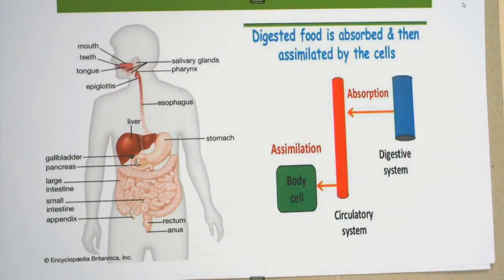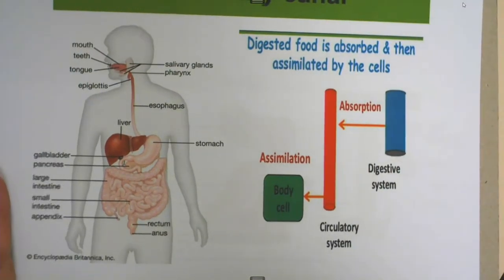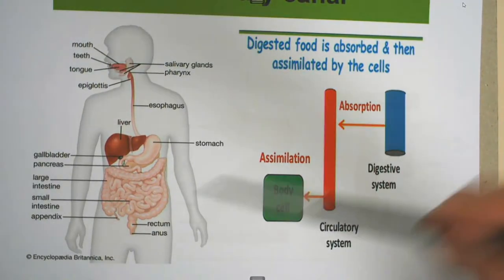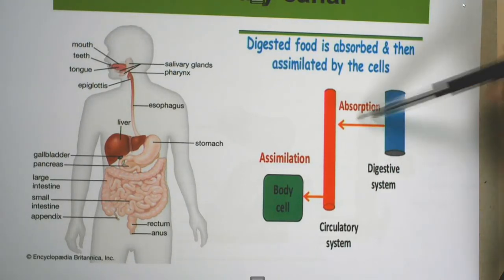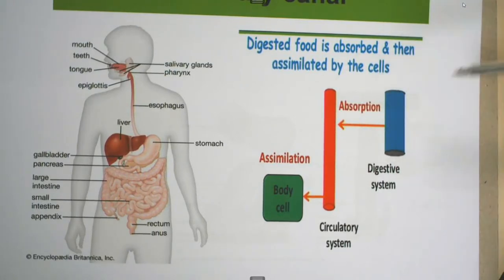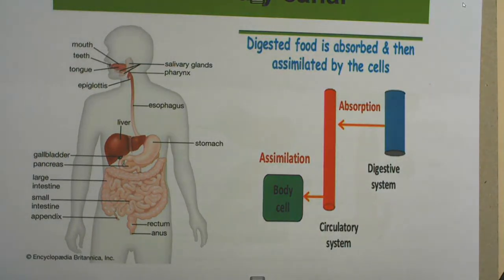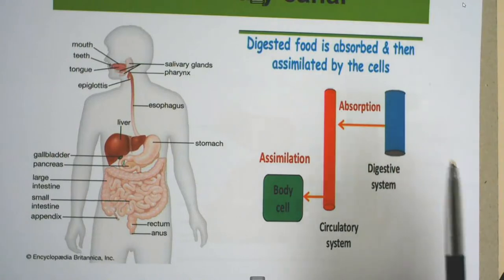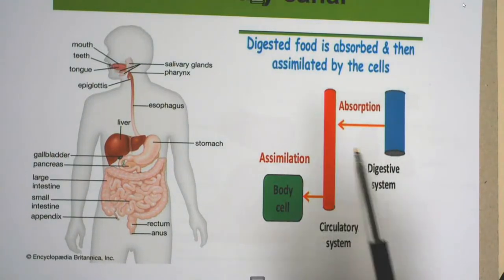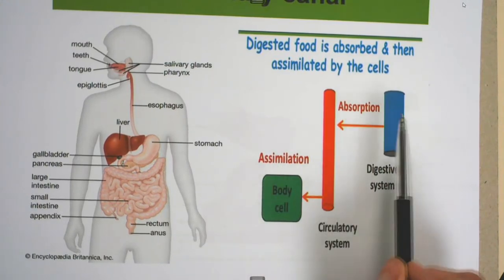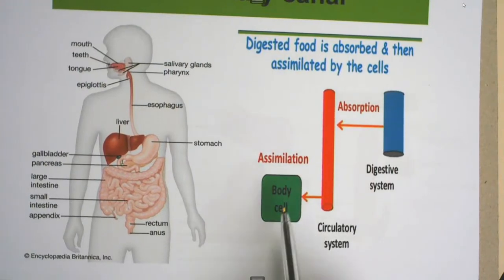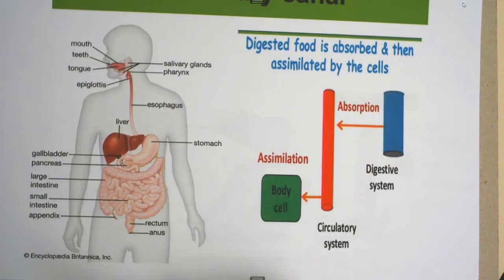What is the difference between absorption and assimilation? Inside your intestines there are lots of folds to increase the surface area, and on those folds there are villi. The smallest sugar will be glucose, the smallest protein will be amino acids — the building blocks — and the smallest fat will be triglycerides. They will be absorbed in their smallest form into the blood. The moment it's in the blood and absorbed by the body cell, it's assimilation. Absorption is from the digestive system into the blood, and assimilation is when it goes from the blood into the body cell.